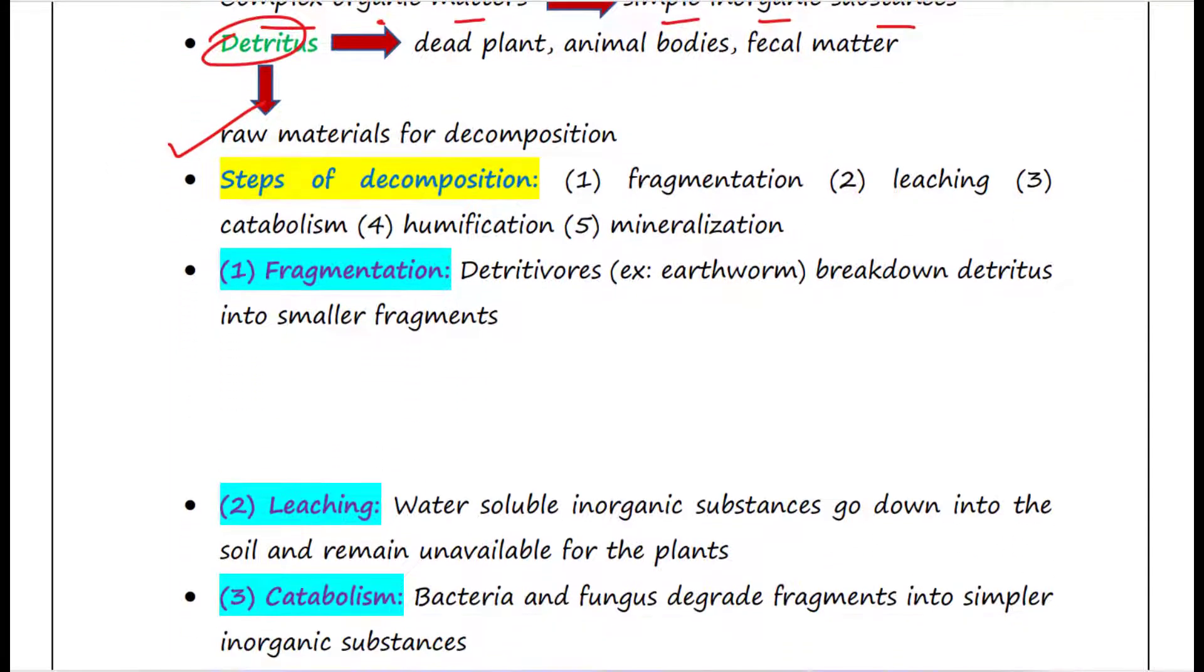First is fragmentation. Detrivores like earthworm breakdown detritus into smaller fragments. So suppose we have a tree here. Now some leaves are falling from the tree. Then here we have the earthworm. So what it will do? It will break down these leaves into smaller fragments. This is called fragmentation.